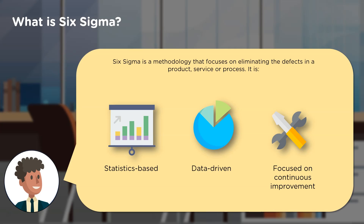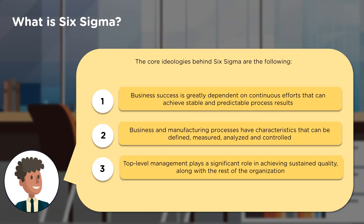The Six Sigma methodology makes sure to find as well as eliminate any sort of defect or variation that could be affecting your product, service, or process. This methodology is statistics-based, data-driven, and focused on continuous improvement. This means there's no end goal on the horizon — there's always another goal to reach.